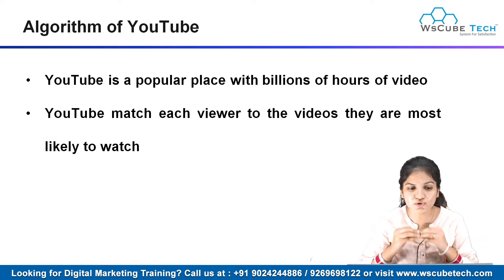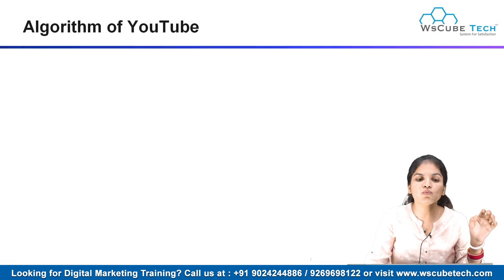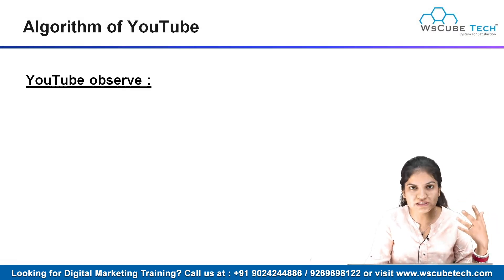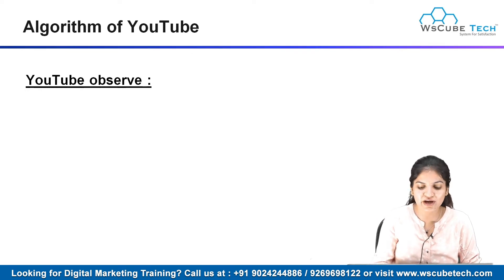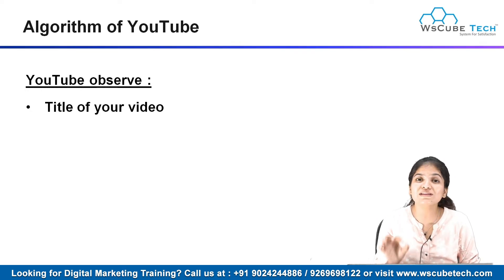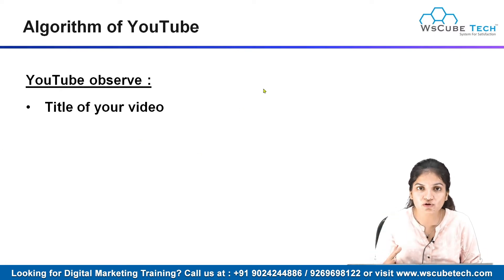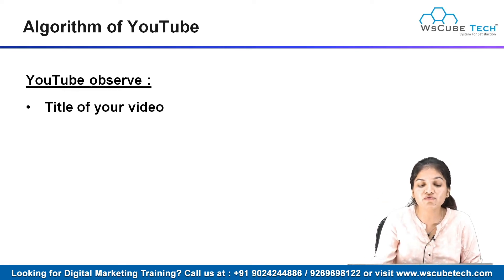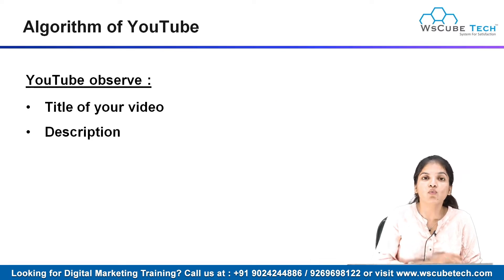In order to do that, YouTube has a particular algorithm. YouTube observes a few things about your content. First of all, YouTube observes the title of your video — whenever anybody searches something related to that keyword, YouTube looks for the title of your video and whether it matches the search. YouTube also observes the description — what you have written about that particular video.